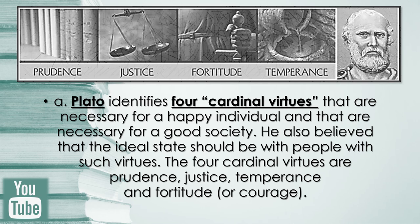Plato identifies four cardinal virtues — virtues that are necessary for a happy individual and that are necessary for a good society. He also believed that the ideal state should be with people with such virtues. The four cardinal virtues are prudence, justice, temperance, and fortitude or courage. Prudence literally means discretion in practical affairs — it is right reason in action. Justice refers to the flawless order by which every human being does his or her own business — the right man in the right place. Temperance refers to an inner strength that protects against excess, consisting of self-regulation and obedience to authority. And fortitude or courage is bravery based on justice.